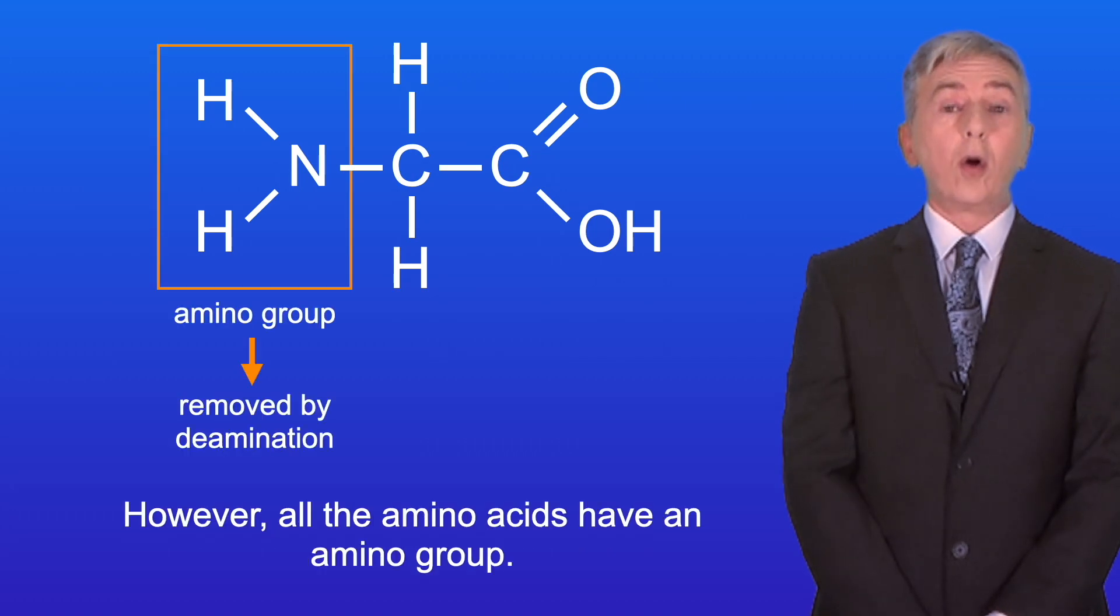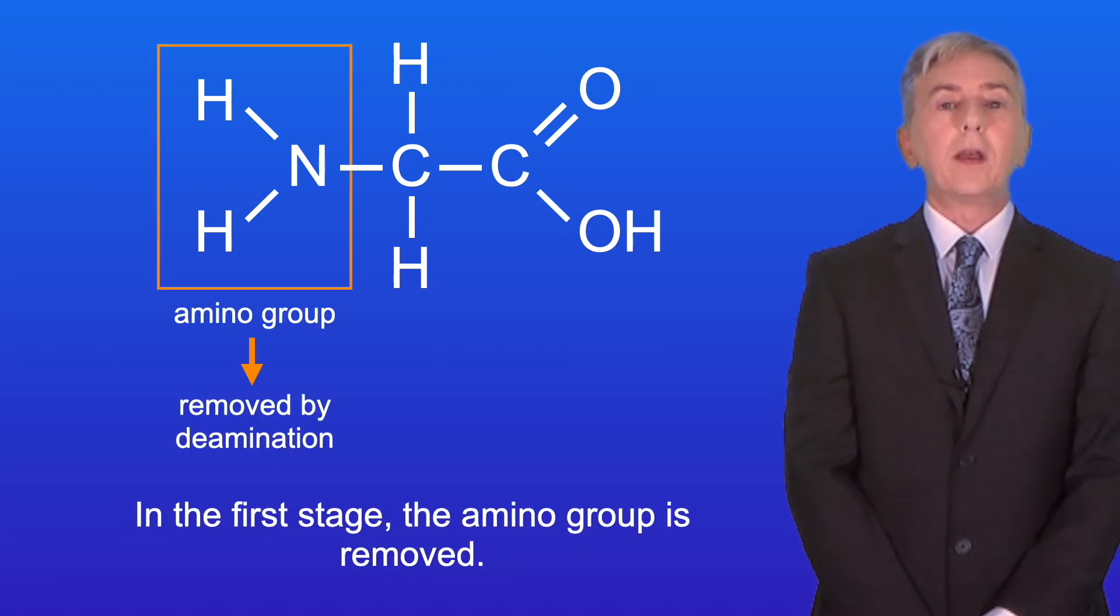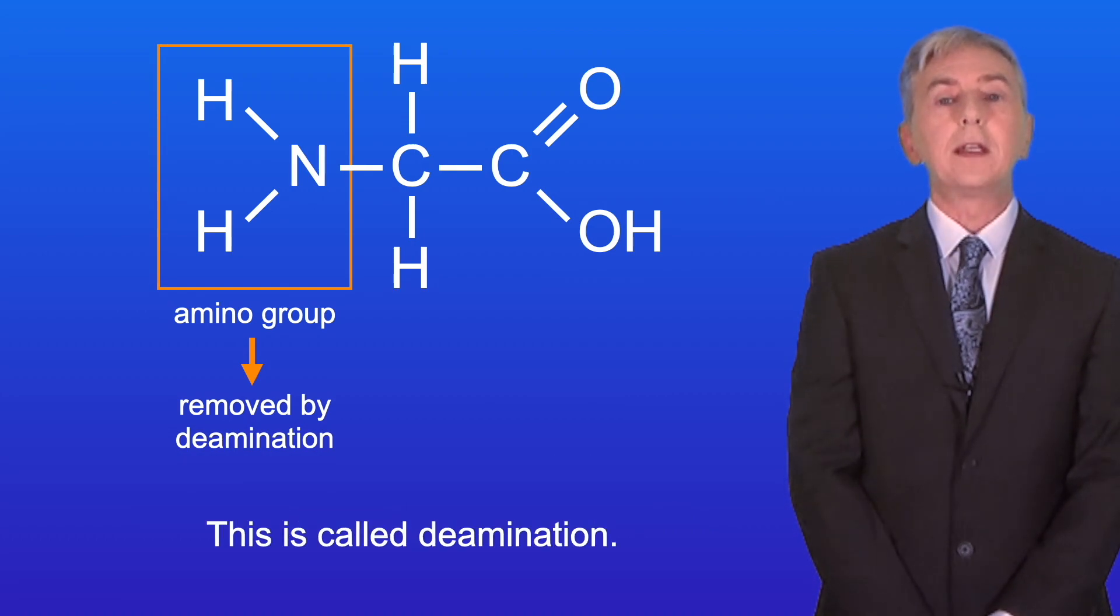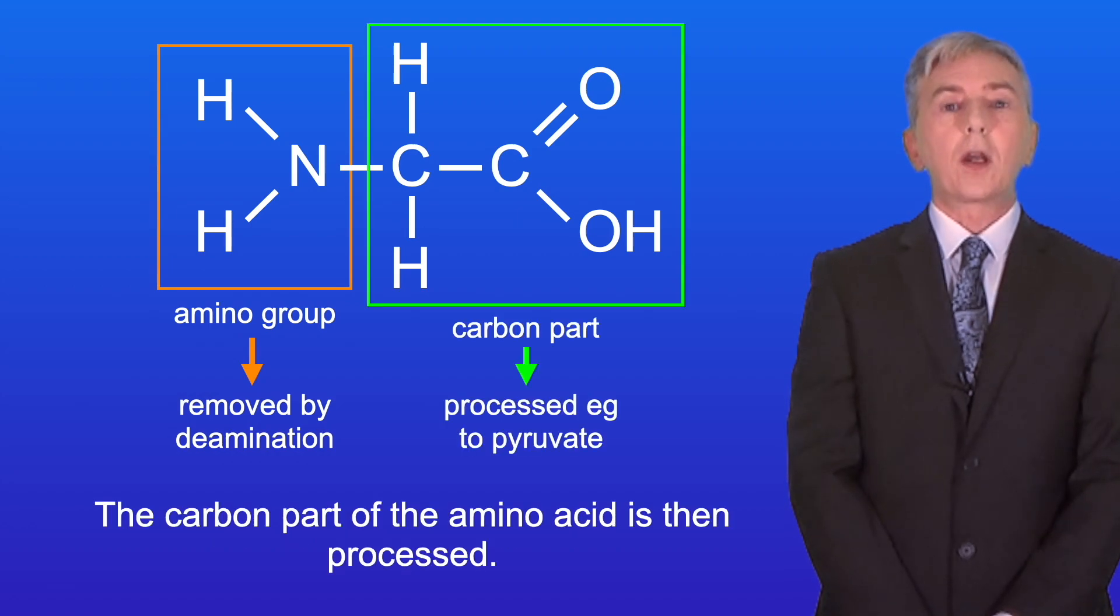However, all the amino acids have an amino group. So in the first stage the amino group is removed. This is called deamination. The carbon part of the amino acid is then processed.